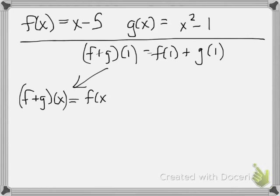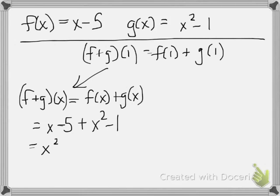If I do, I'm going to get x minus 5 plus x squared minus 1. I'll combine whatever like terms I have, and I end up with x squared plus x minus 6. That's my new function of adding f and g.